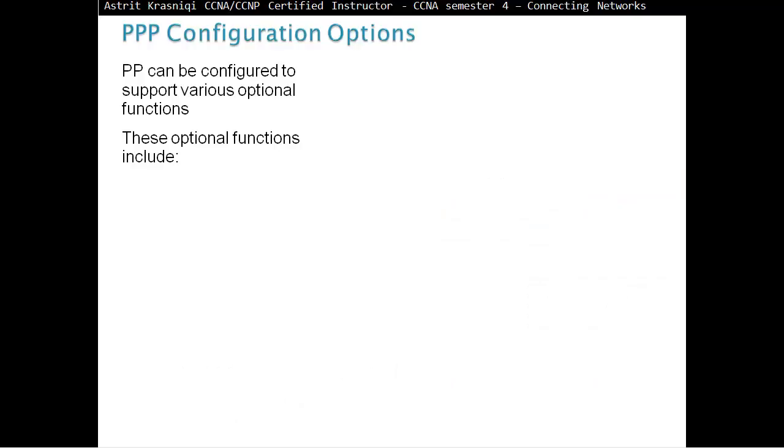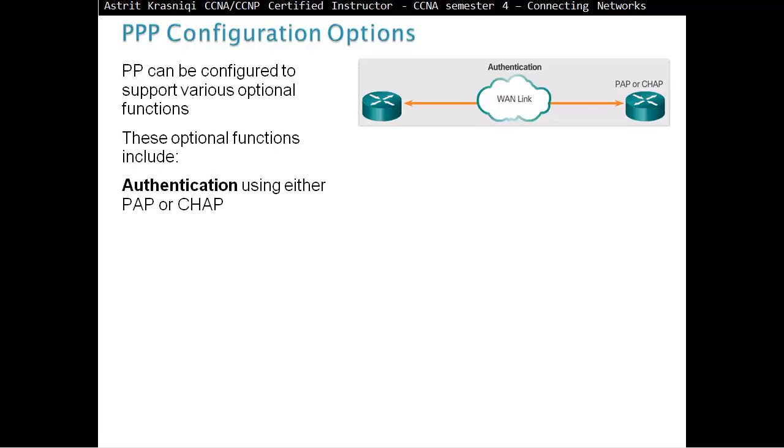PPP configuration options. PPP can be configured to support various optional functions. These optional functions include authentication. Big thing, we can authenticate at layer 2, PPP. We can authenticate either with PAP, Password Authentication Protocol, or CHAP, Challenge Handshake Authentication Protocol.